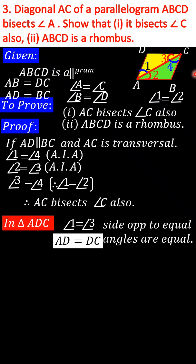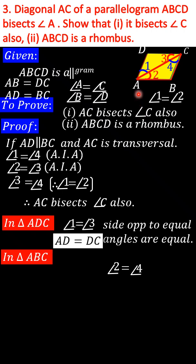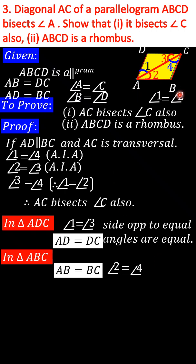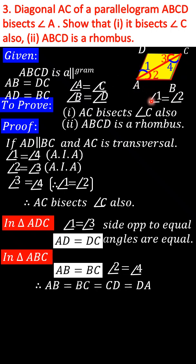Similarly, in triangle ABC, we can say angle 2 is equal to angle 4. Therefore, we can say AB is equal to BC, applying the same rule — that is, side opposite to equal angles are equal. Already ABCD is a parallelogram, so opposite sides are equal. In these two triangles, we proved adjacent sides are equal. Overall, we can say all sides are equal, that is AB is equal to BC is equal to CD is equal to DA.